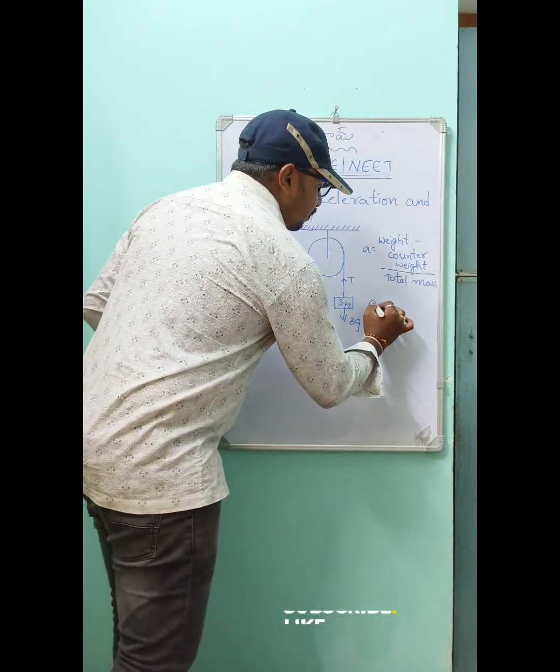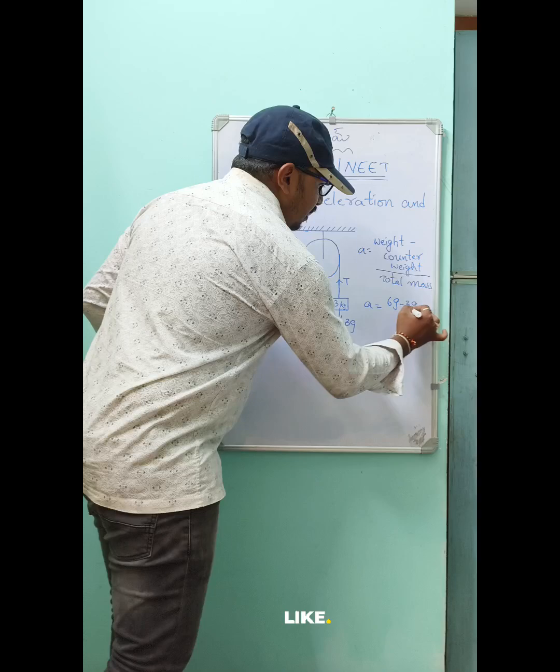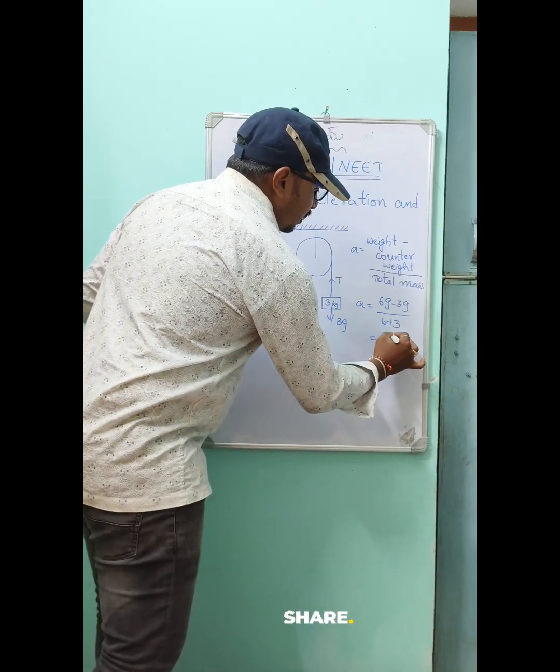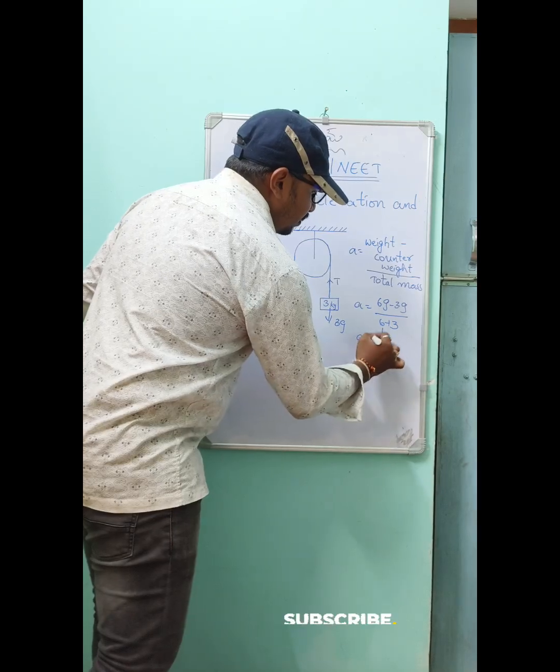Acceleration equals 6g minus 3g divided by total mass 6 plus 3. That's 3g divided by 9, so the acceleration is g by 3.